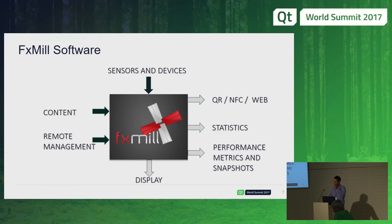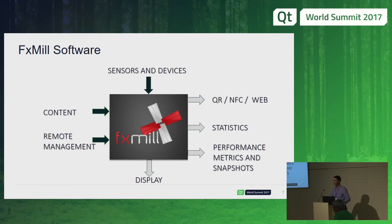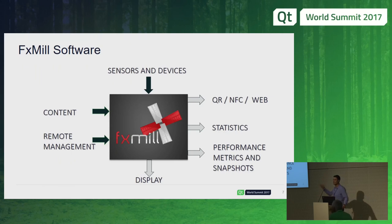You have the sensors — in this case the Kinect. You have the content; the Qt Brand Manager helped me and created all the content you've seen here. You have remote management — from my laptop I can connect to the walls. The display in this case is a 3×3. And you can generate other outputs like statistics, metrics, and snapshots. When I had an installation running remotely in Munich while I was in Berlin, I was generating snapshots every 10 minutes so I could see if something went wrong. You can also have QR codes and NFC for further interaction.